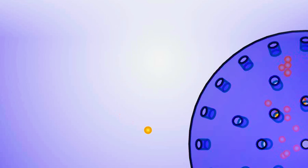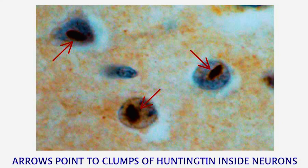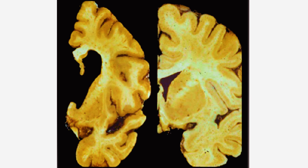Recent research has even questioned the presumed role of the cleaved Huntington fragment in the disease and has started pointing a finger at the full-sized mutant protein. Whatever this protein is doing to the brain cells, it starts before much cell death has occurred — not until the later stages of Huntington disease does the patient become more rigid and unable to communicate.